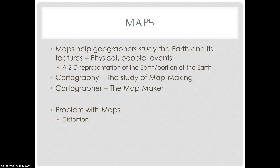Now let's start talking about maps. Maps help geographers study the Earth and its features. Maps can represent physical features, peoples, or events in the world. A map is basically a 2D representation of the Earth or a portion of the Earth. Cartography is the study of mapmaking, while a cartographer is the mapmaker. Every single map has an innate problem, and that is distortion, simply because you will always have distortion when you are transferring a sphere onto a rectangle.